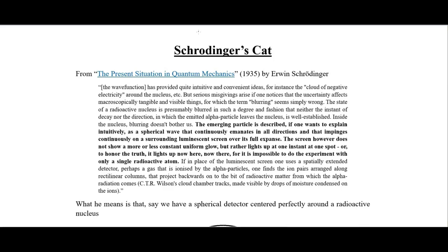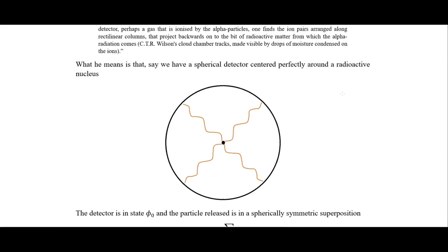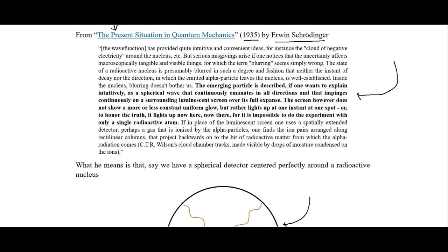In this video I'm going to discuss the famous Schrödinger's cat thought experiment. This thought experiment comes from a paper — linked in the lecture notes in the description — called 'The Present Situation in Quantum Mechanics,' published in 1935 by Erwin Schrödinger. This part is leading up to the cat experiment. He's talking about an experiment where we have a radioactive particle in the center and a screen all around that can detect the radiation coming off of that particle.